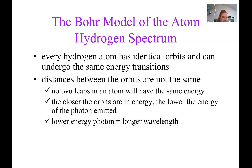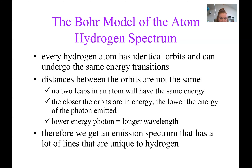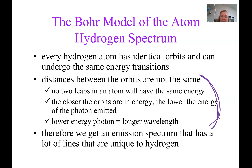When we talk about this with hydrogen, every hydrogen atom has the same orbits, which means it can go through the same transitions. That's why we can look at emission spectra as a fingerprint — it will have the exact same transitions no matter what. The distances between the orbits are different, so different amounts of light are released. Even though hydrogen has just one electron, that electron can make different transitions as it absorbs more or less energy.